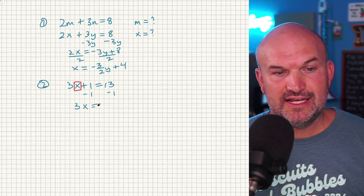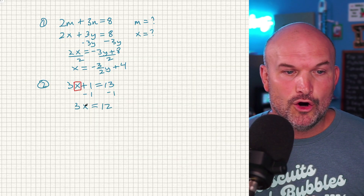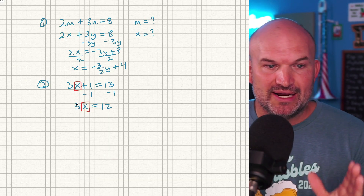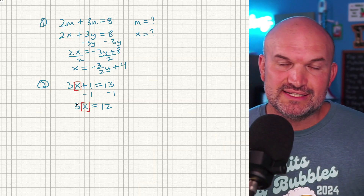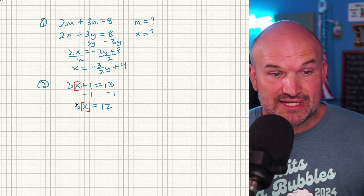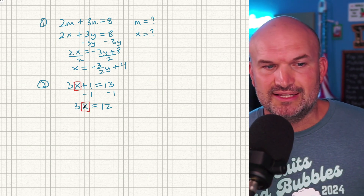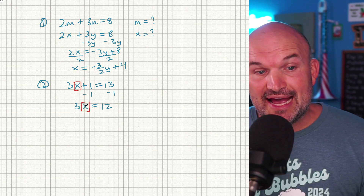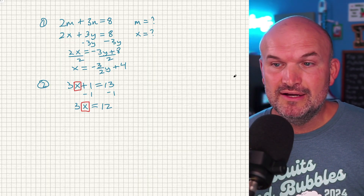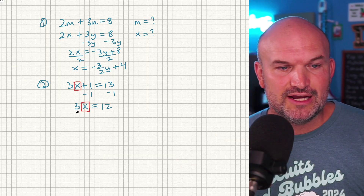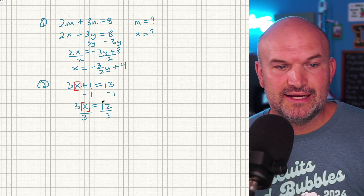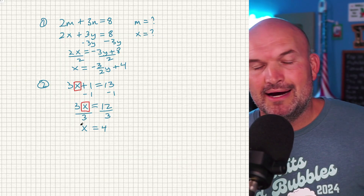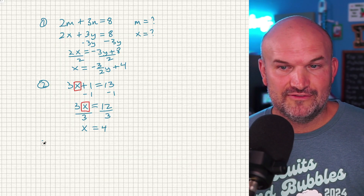From now on, every single time that I rewrite this equation, I'm always going to write the X over the box, and I'm not going to stop until that X with the box is completely isolated. So I need to undo addition — the 1 is being added to the X, so I'm going to subtract 1 on both sides. Then I have 3X equals 12. Put the box over the X again. Now I can see the X is being multiplied by 3, so I divide by 3 on both sides. My final answer is X equals 4 — since X is now isolated, I don't write the box.